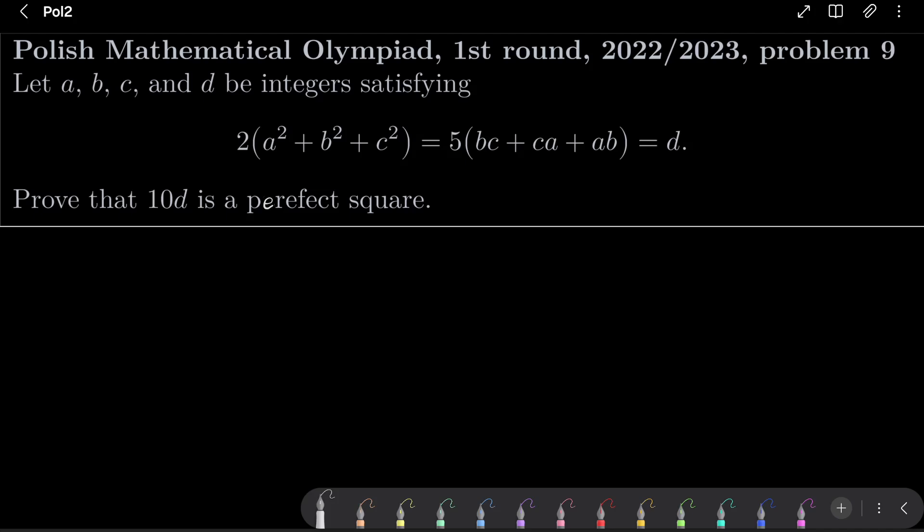Let a, b, c, and d be integers satisfying 2(a² + b² + c²) = 5(bc + ca + ab) = d. We wish to prove that 10d is a perfect square.